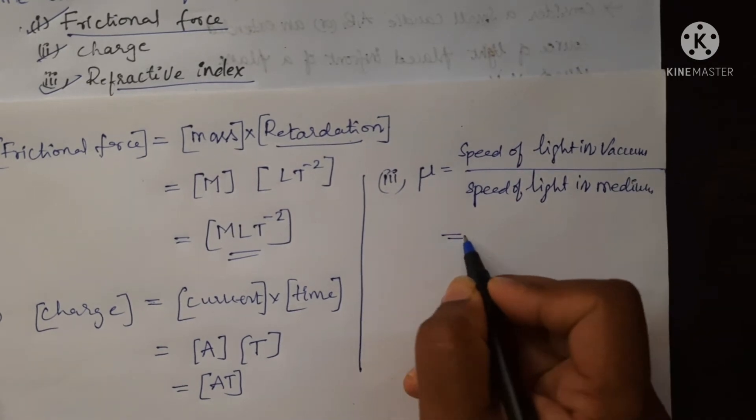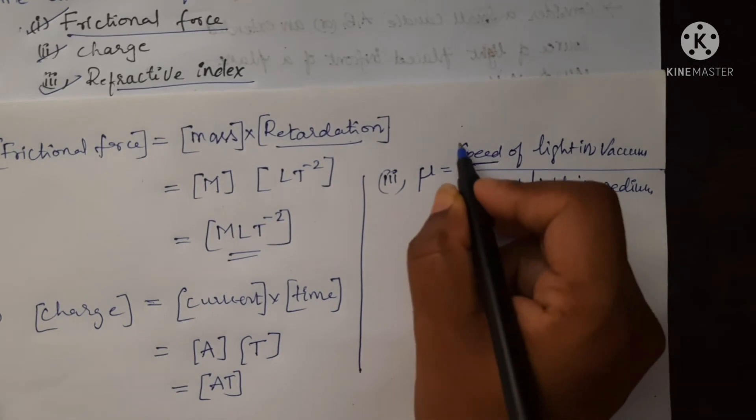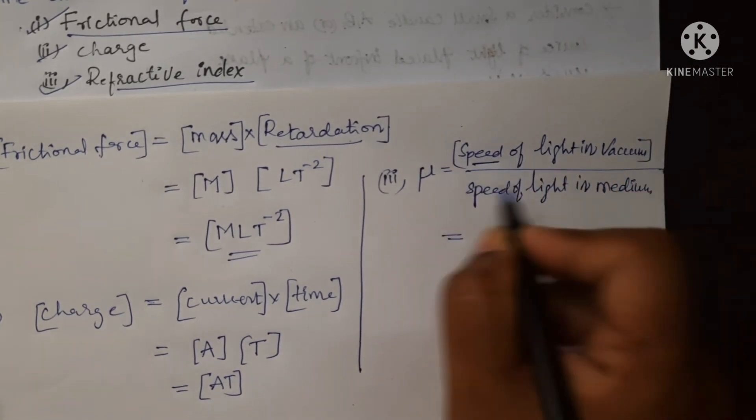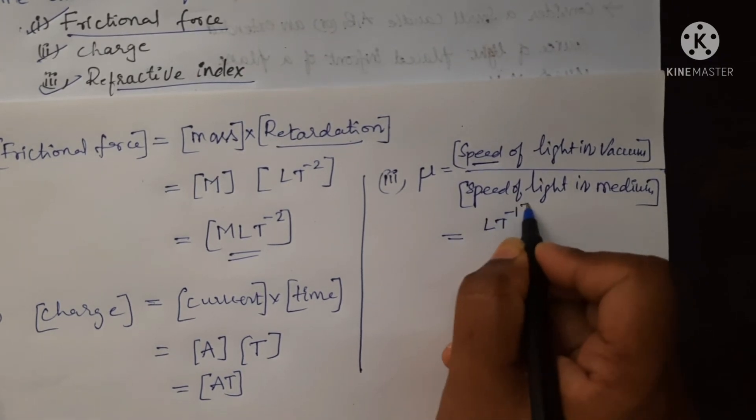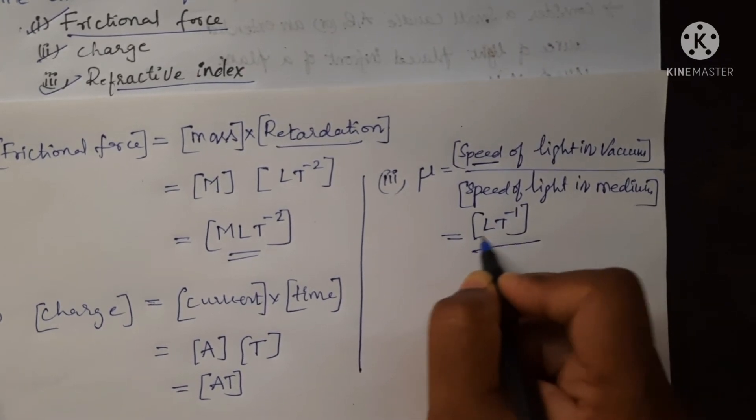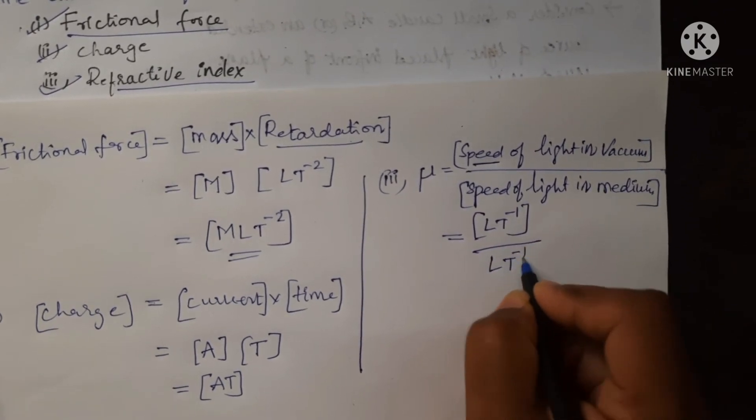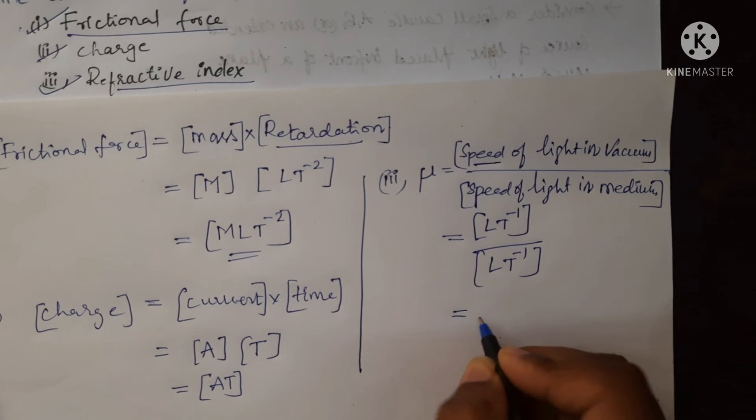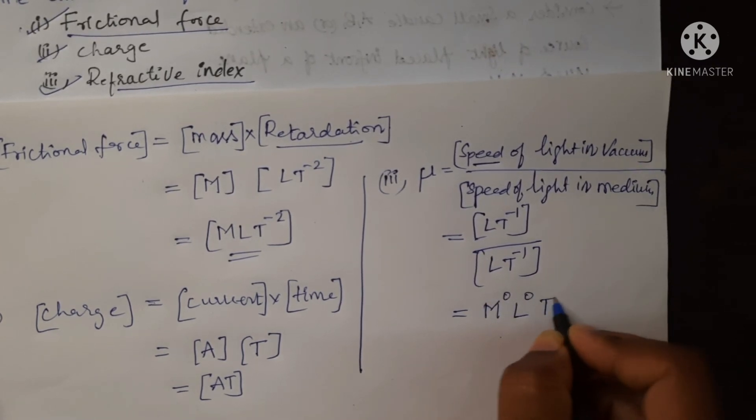We write the dimensions of speed of light in vacuum as LT^-1 upon the dimensions of speed of light in medium, which is also LT^-1. Both get cancelled, and the dimensions of μ are M^0 L^0 T^0. That means it is a dimensionless quantity.